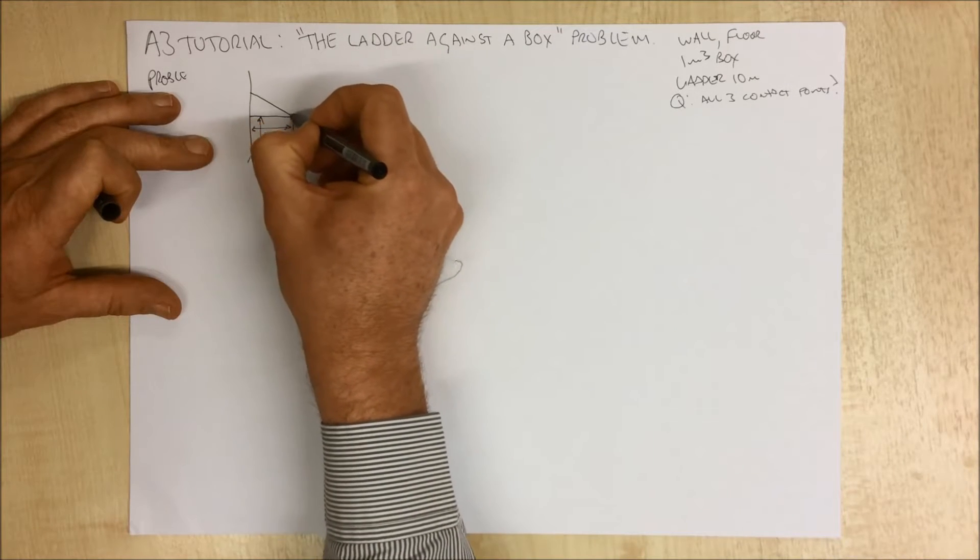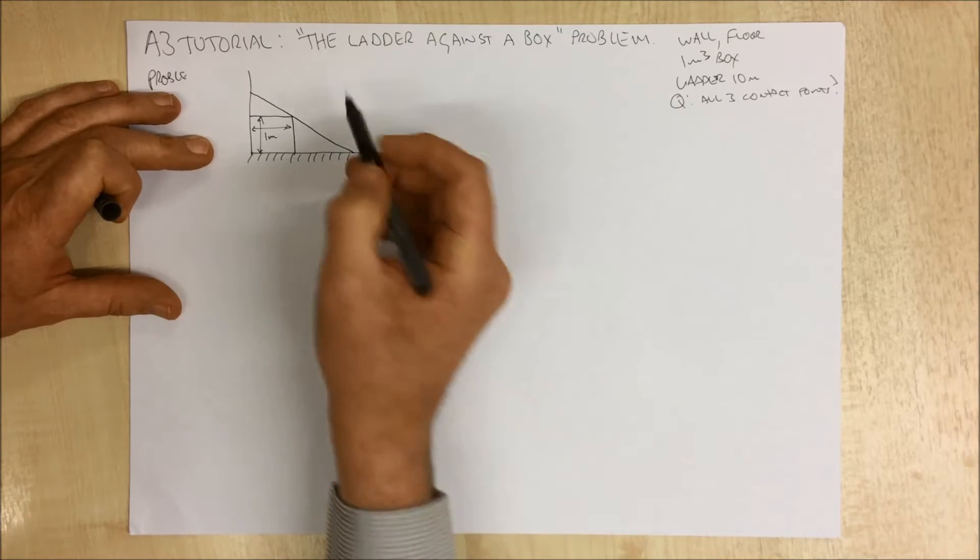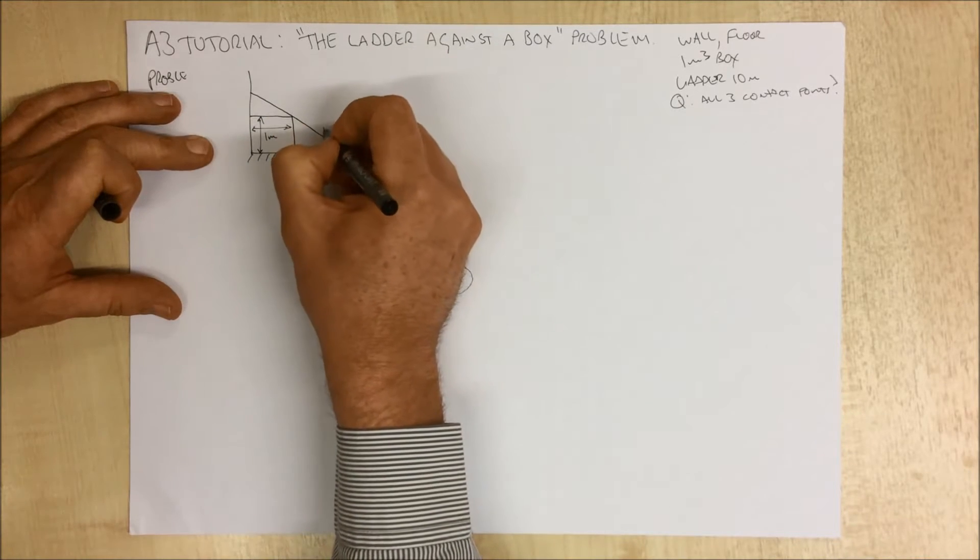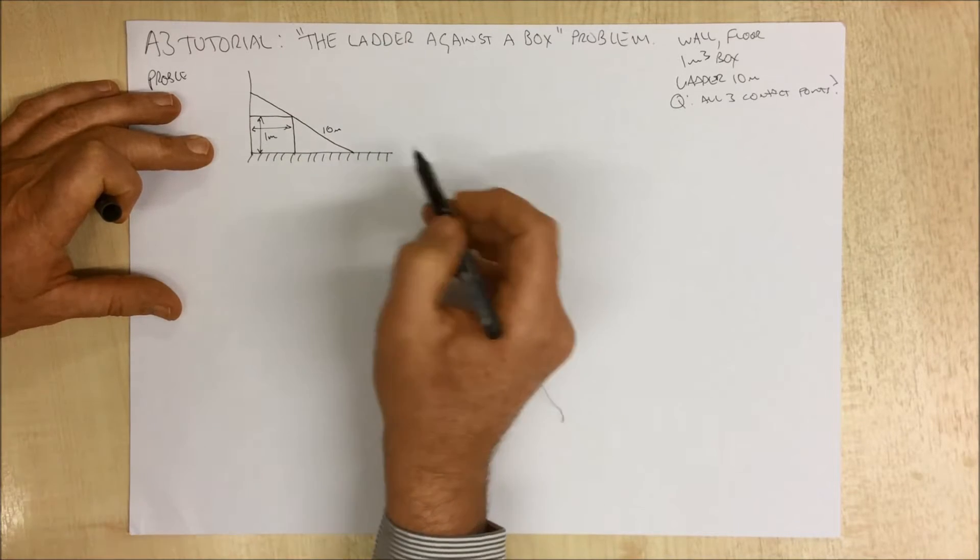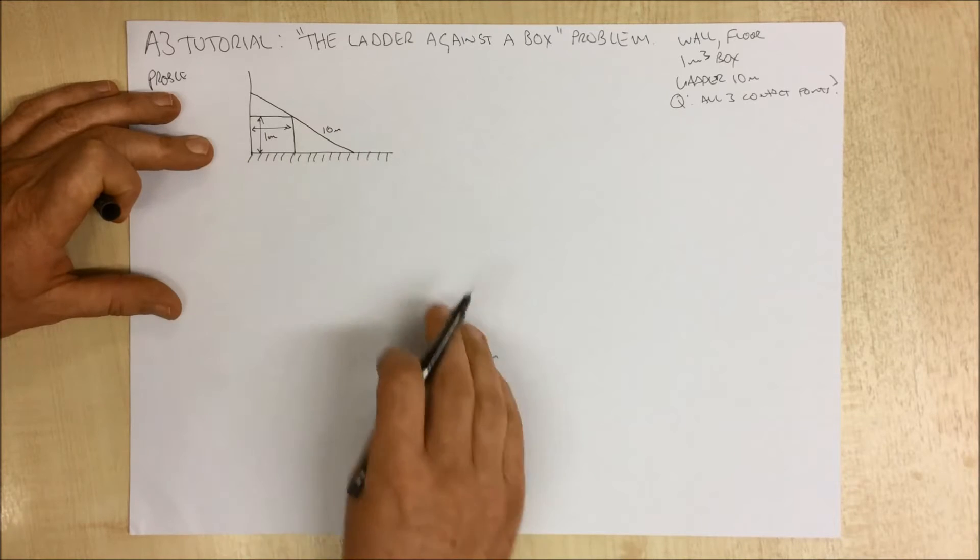The question is effectively asking what's this distance and what's this distance where the ladder contacts the wall, the corner of the box, and the floor.